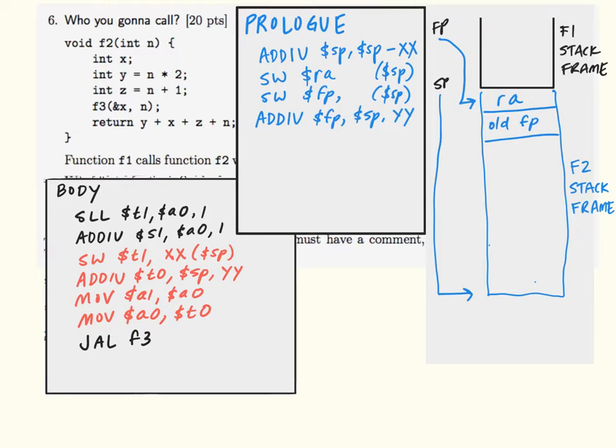So believe it or not, we're almost done. And now we have to handle the calling convention responsibilities. The first responsibility we have is to save any callee saved registers that we happen to be using. This question told you that you need to save one of the values into S1. So we're going to have to save the old value of S1 onto the stack so that we don't corrupt it. This is in case F1 happened to have an important value in S1. So we're going to perform a store word that's going to store the value of S1 somewhere on the stack, and we're going to put it right here.